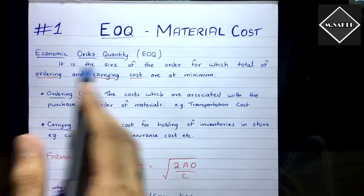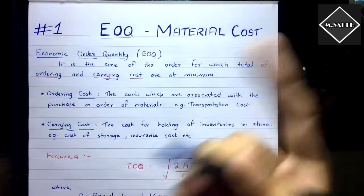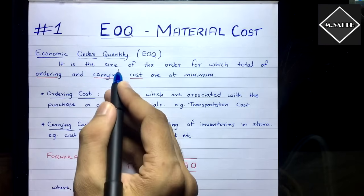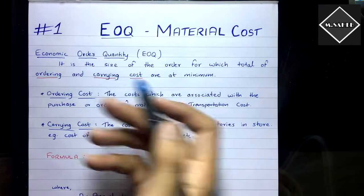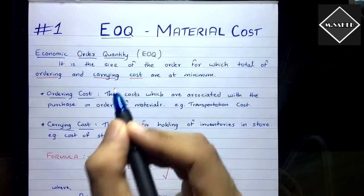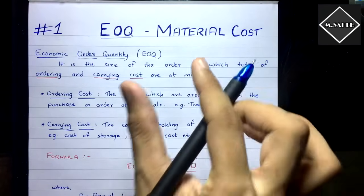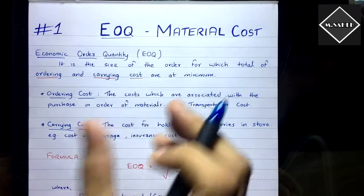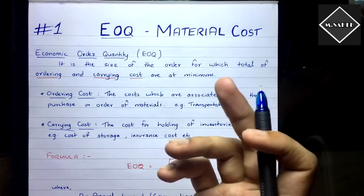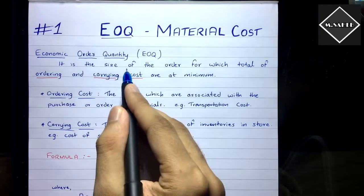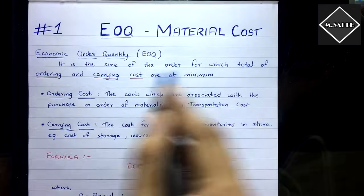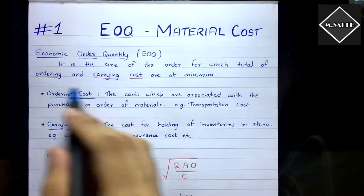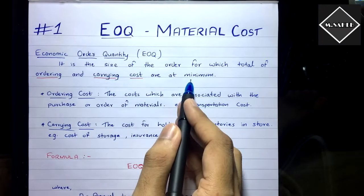Economic Order Quantity — what is this EOQ? EOQ is nothing but a quantity that you order. It's the size of the order — how much to order. It is the most optimal and most beneficial quantity, that is why it is called Economic Order Quantity. It is the quantity which is most economical for the factory or business to order, because at that quantity your total of ordering and carrying cost becomes minimum.